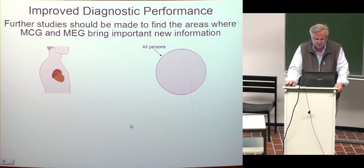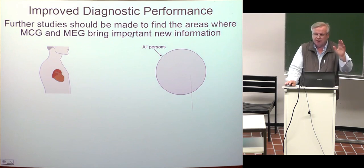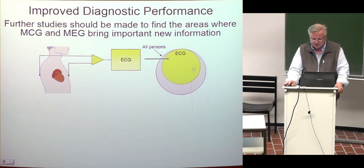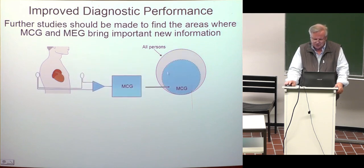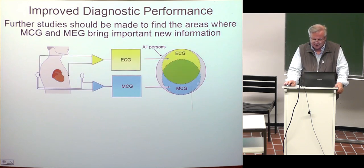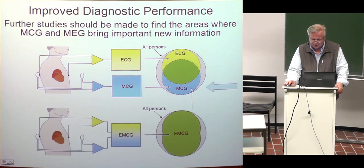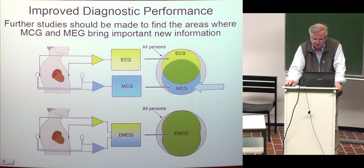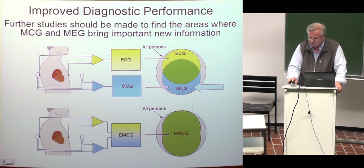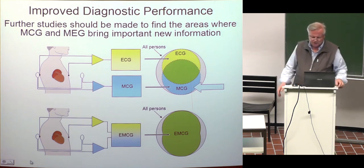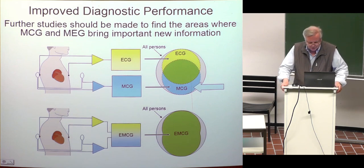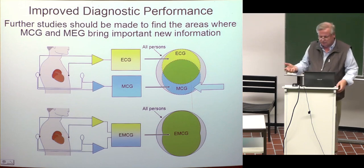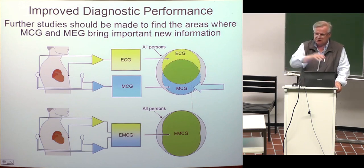Further studies should be made to find the areas where MCG and MEG bring important new information. With ECG one can diagnose a certain group of patients correctly; with MCG one can diagnose a similar number but they are different patients — that is the improvement obtained with magnetic cardiography. We tried to find some factor characterizing those patients diagnosed by MCG but not ECG, but didn't find one. Interestingly, if we had found such a characteristic factor, we would not need MCG anymore — we would only need ECG and that factor. Regarding instrumentation: the MCG signal is rather strong, so a shielded room is not always necessary. High-TC squids cooled with liquid nitrogen have been developed; the noise level is sufficient for MCG, and the price is reasonable. I believe more studies with magnetocardiography should be made.